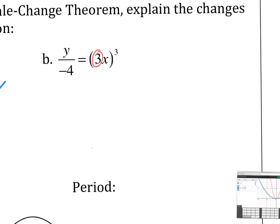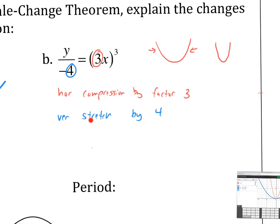This times 3 right here is a horizontal compression by a factor of 3. So if this is my original, it's going to get squashed inward by a factor of 3. There is a vertical stretch because of this, and the negative here means I'm going to flip it upside down — a vertical reflection. So instead of opening upward, it's going to open downward.